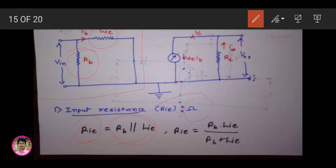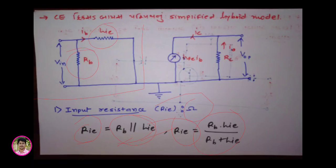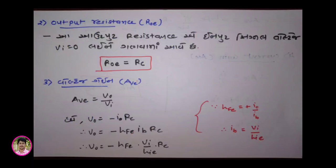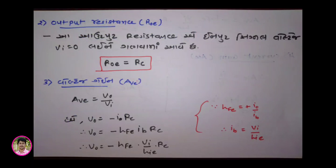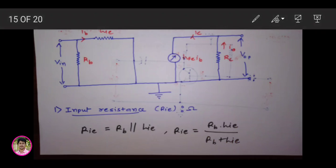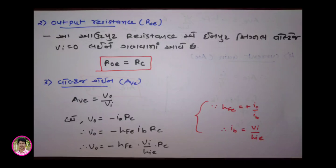Now, the input resistance is at the input. RBA is equal to RBA. If we look at the output resistance, the output resistance follows from the input resistance.